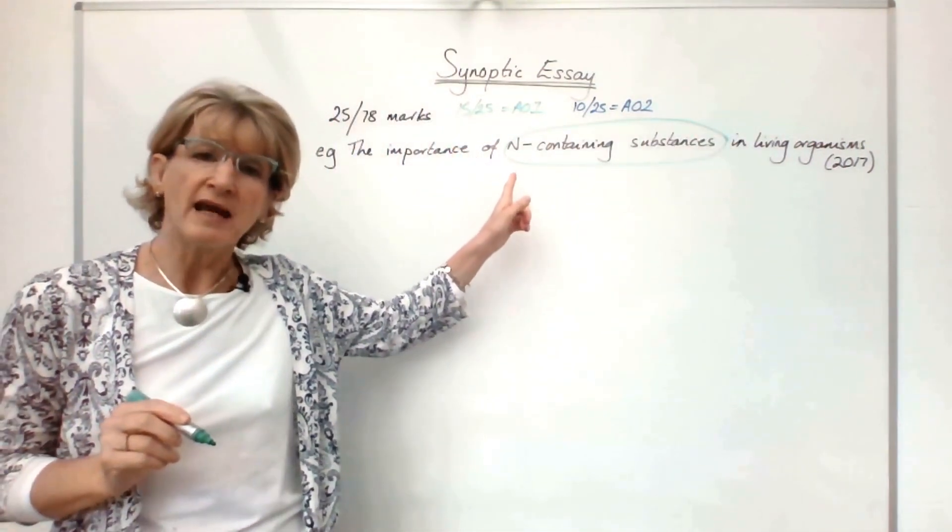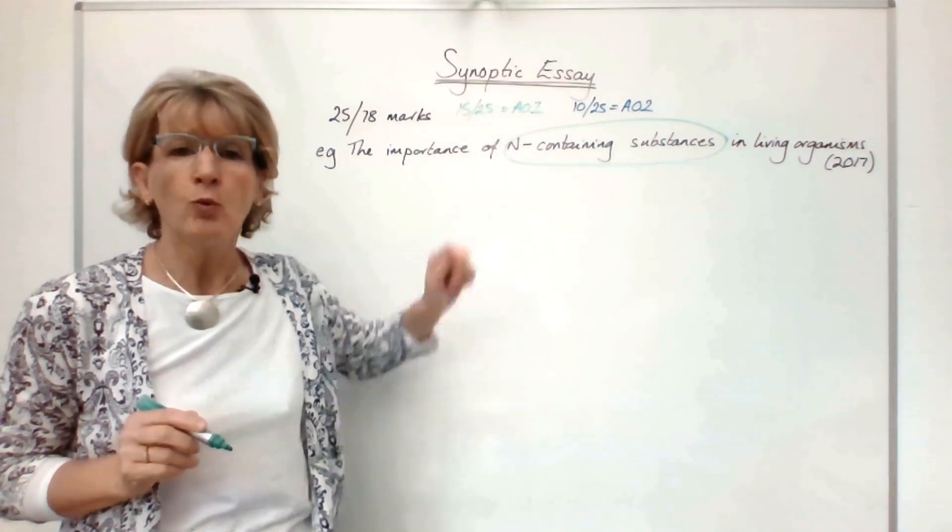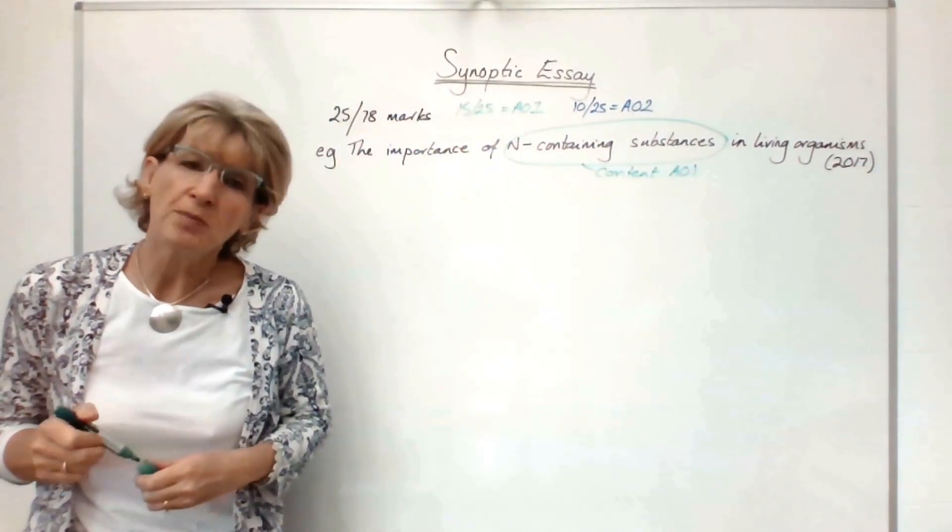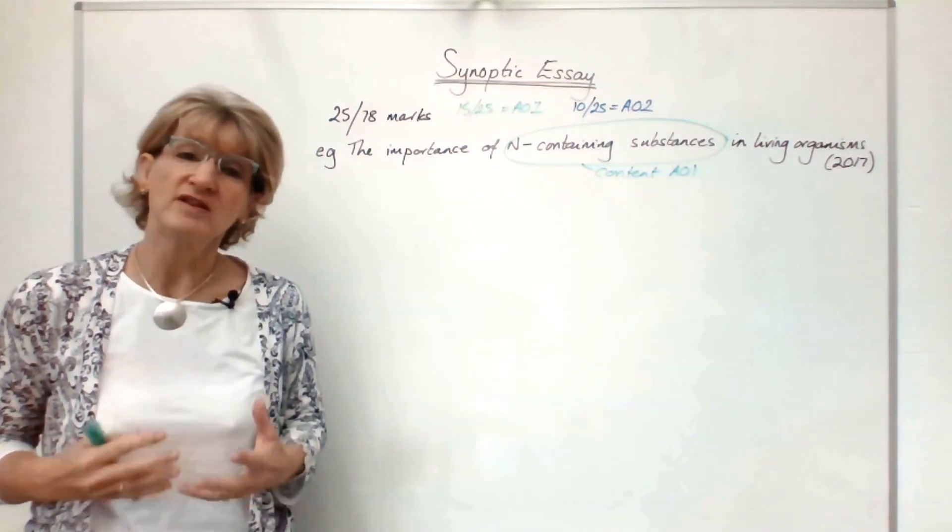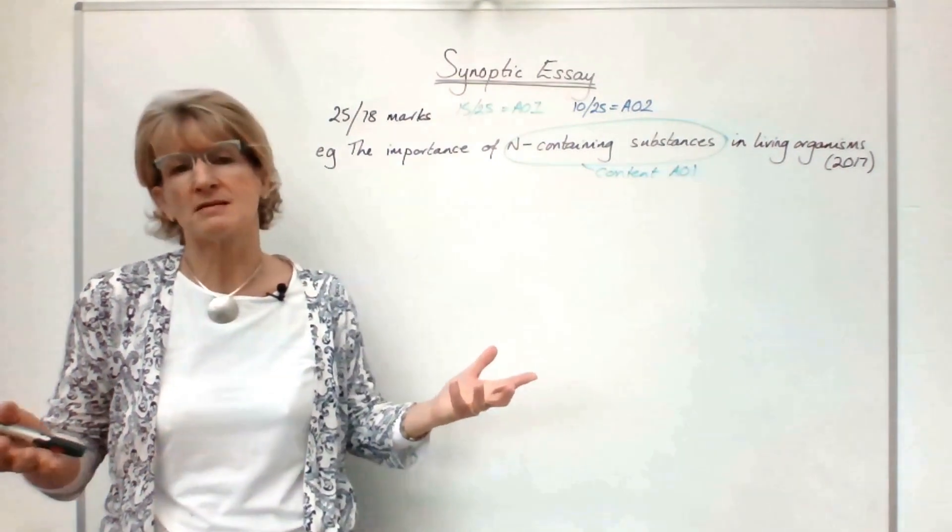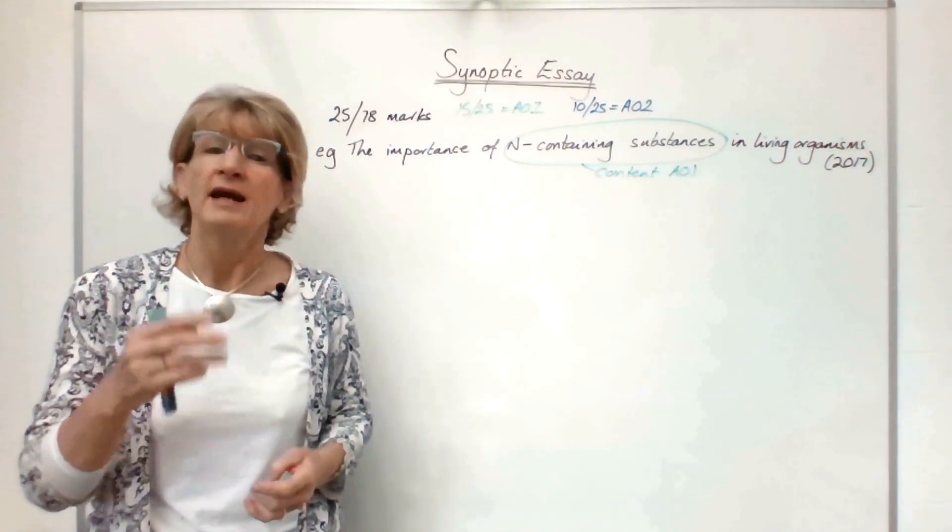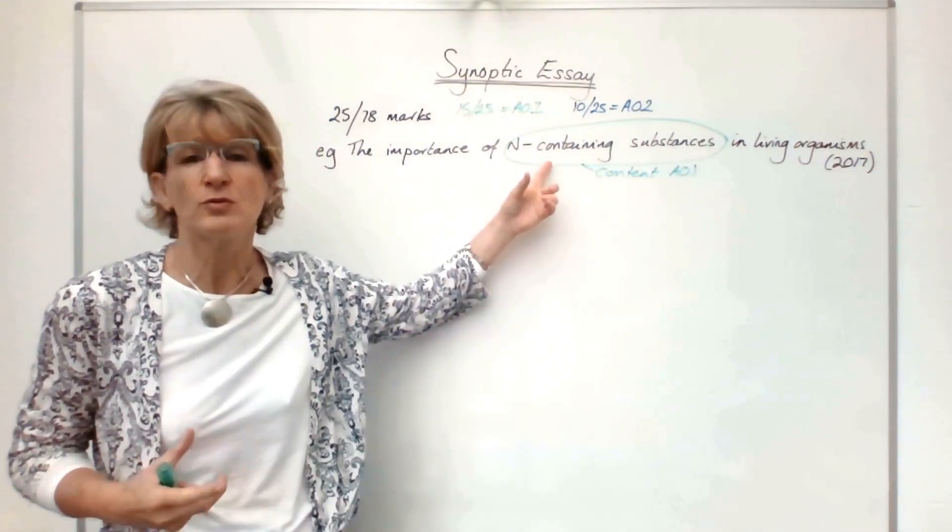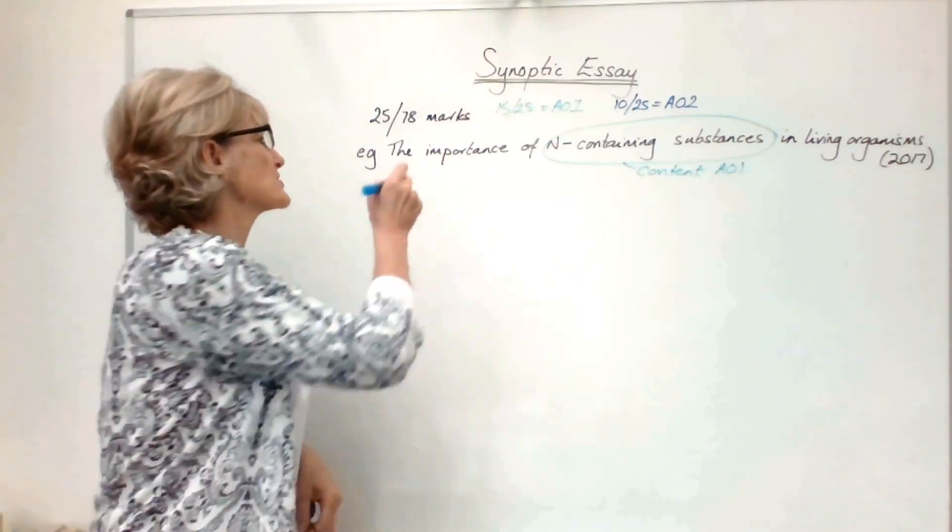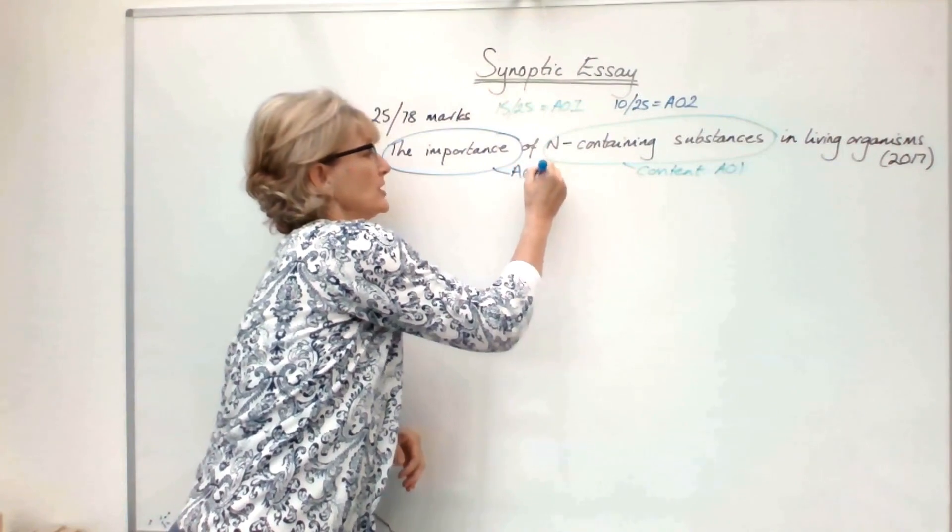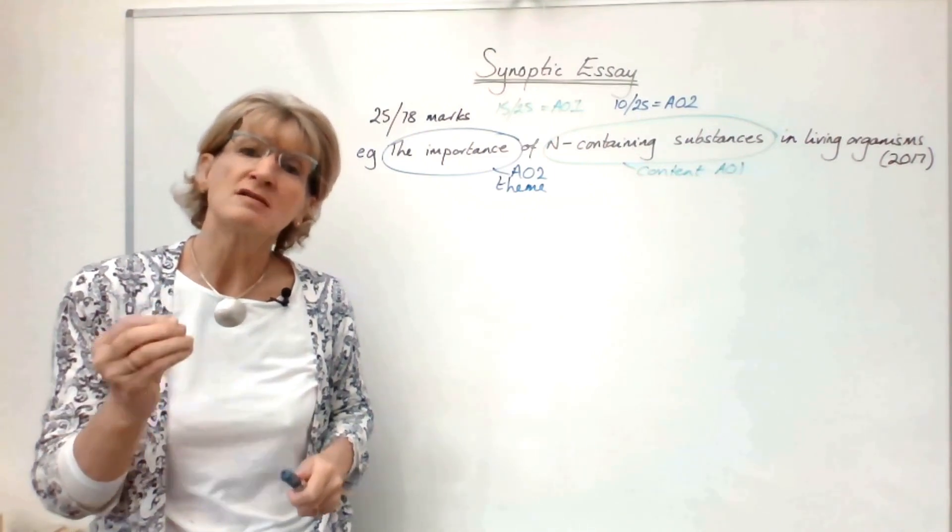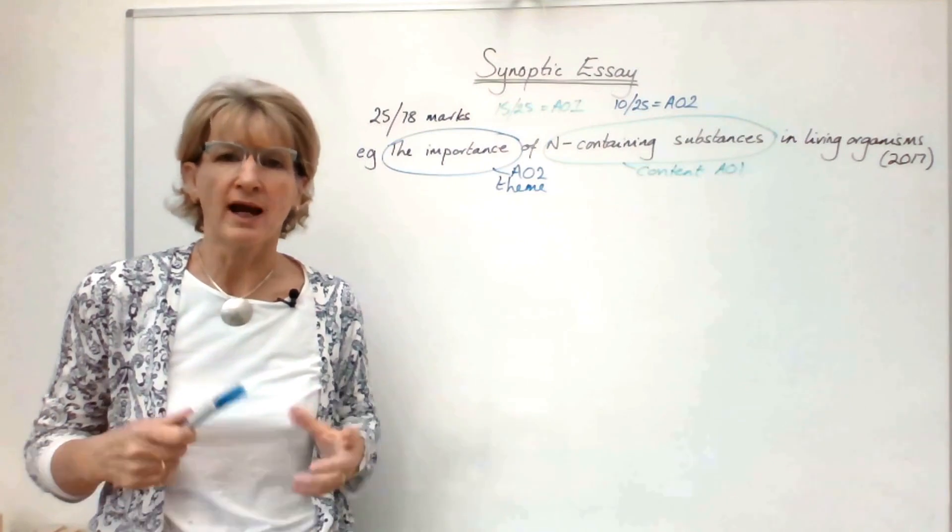Choosing the content of your essay is the AO1 marks, so choosing the topics that you're going to write about. For this essay title, you could be talking about things like proteins, hemoglobins, antibodies, hormones, ATP, DNA, all of those substances that contain nitrogen. Whereas the AO2 marks are how you address the theme of the essay.